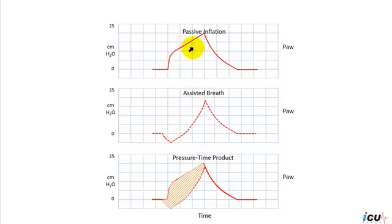If you lay the passive inflation breath over the assisted breath, we can recognize this hatched area that illustrates the pressure-time product and represents the patient's effort contributed to the delivery of the breath. So the bigger the pressure-time product, the more effort the patient is doing during inspiration.